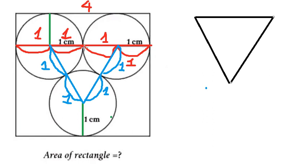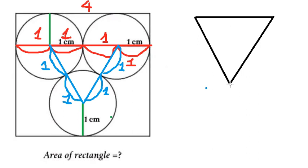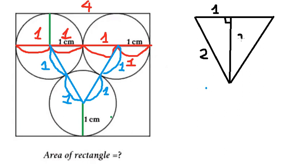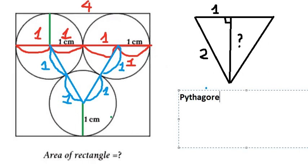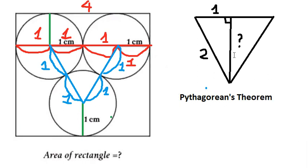Now we want to find the height of this triangle. The height goes to the midpoint of this side, and we have one right angle. This side should be about number one, and this one is about number two. So to find the height, we can use the Pythagorean theorem. I will call the height small a.